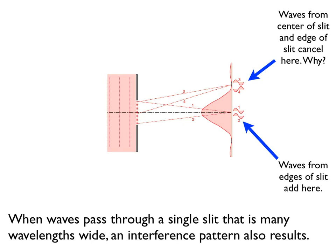When waves pass through a single slit, especially if the slit is many wavelengths wide, quite an interesting thing happens. We get an interference pattern, and the reason for this is as follows.